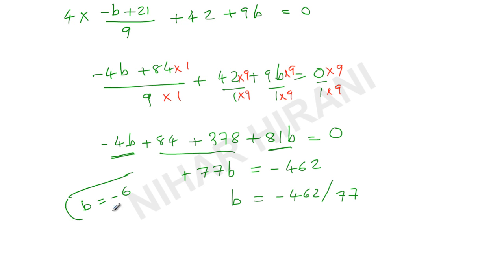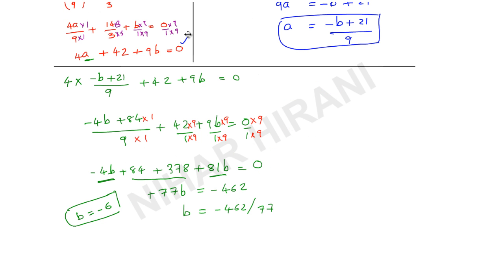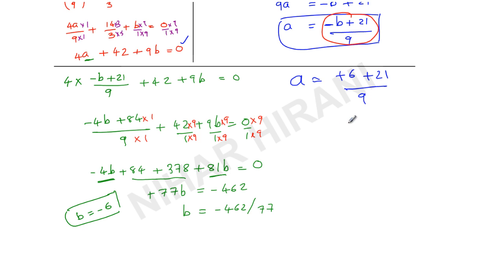Now I want the value of a. I substitute b = −6 into a = (−b + 21)/9. That gives a = (−(−6) + 21)/9 = (6 + 21)/9 = 27/9 = 3. Done.